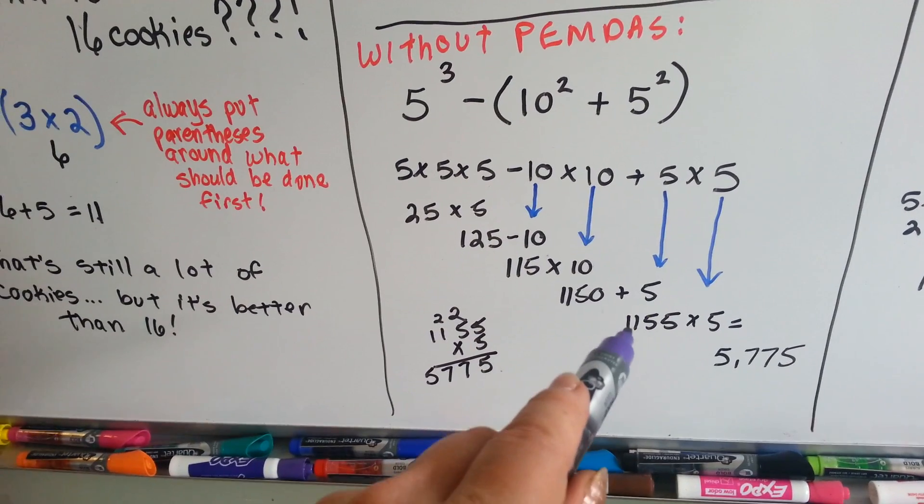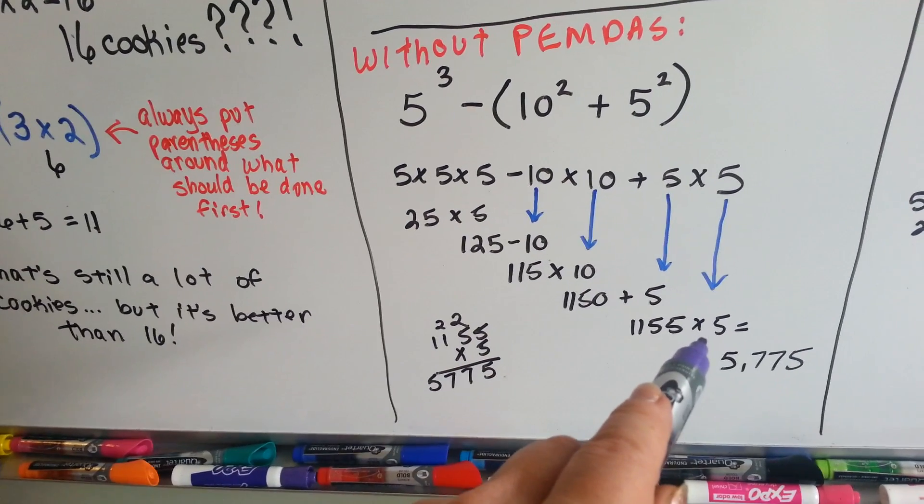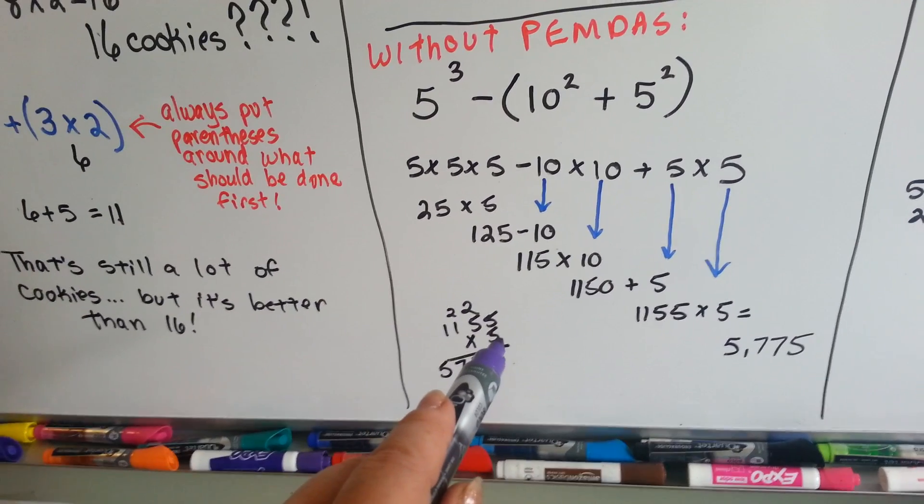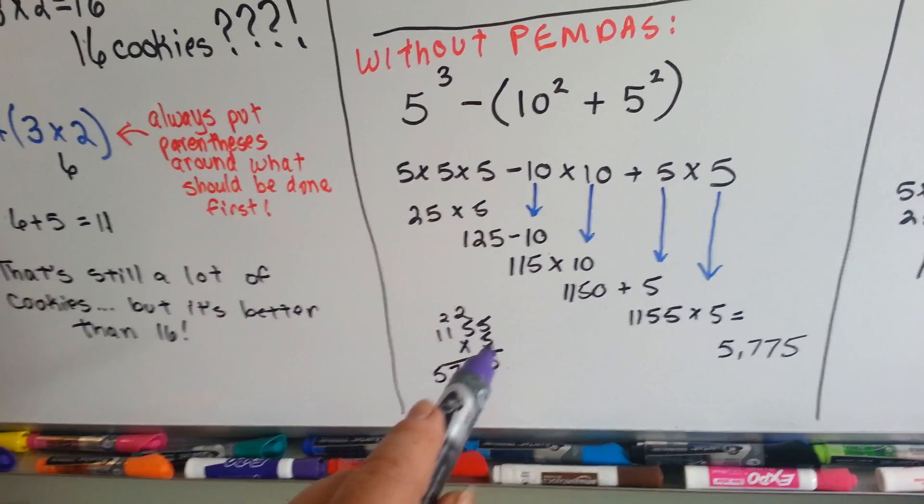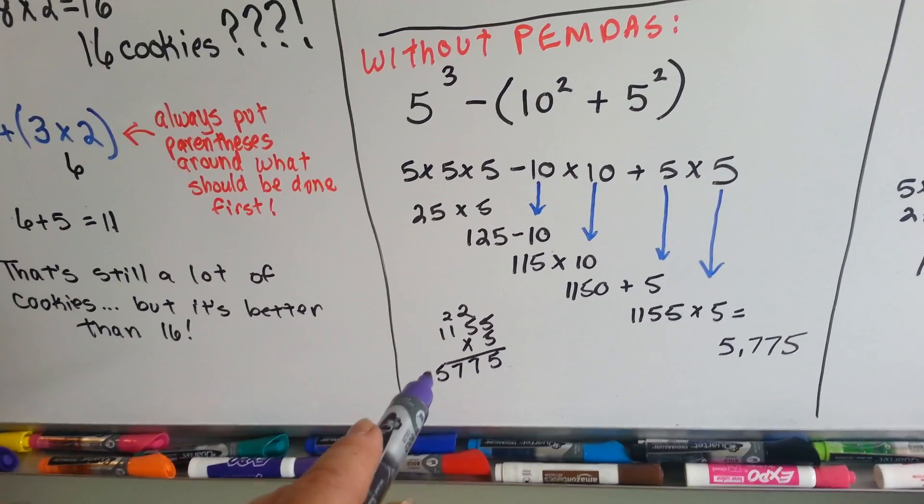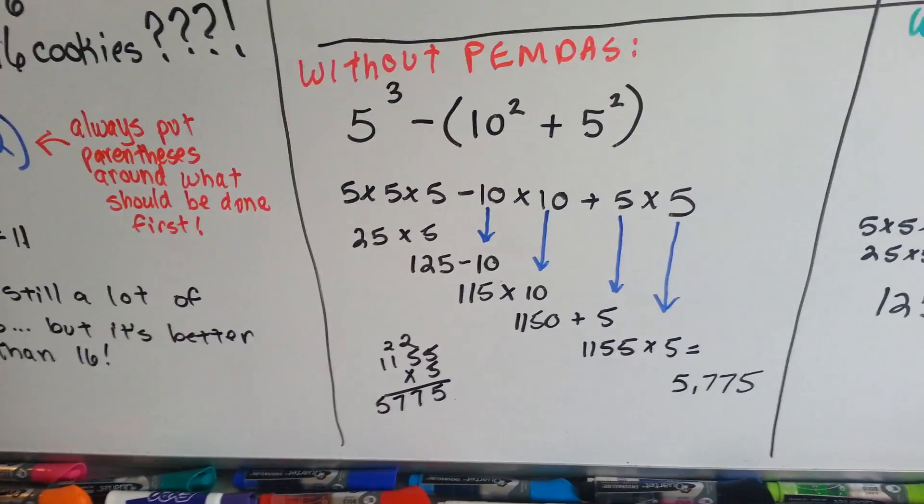Now, we have to add the 5. So, we have 1,155, and now we have to multiply that by 5. We do. 5 times 5 is 25. Carry the 2. 5 times 5 is 25, 26, 27. Carry the 2. Put the 7 down. 5 times 1 is 5, 6, 7. And then, 5 times 1 is 5. Our answer is 5,775.